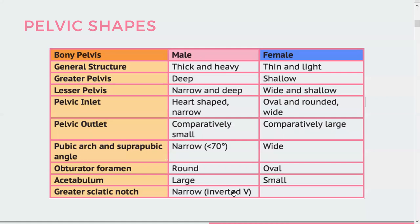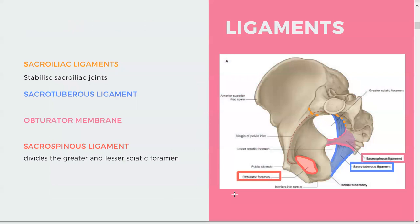Traditionally, pelvic shapes are thought of as male and female with different characteristics. Obviously there are variations, but for exam purposes the male pelvis is thick, heavy, and deep, while the female pelvis is thin, light, and shallow — all the traditional adjectives you can think of. In terms of ligaments, the very important ones are the sacrotuberous ligament, sacrospinous, and obturator membrane, because those create anatomical spaces important for identifying different structures.